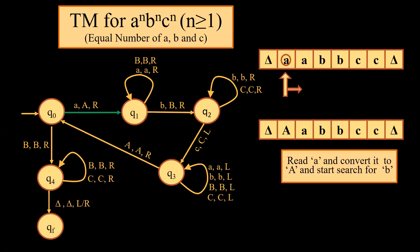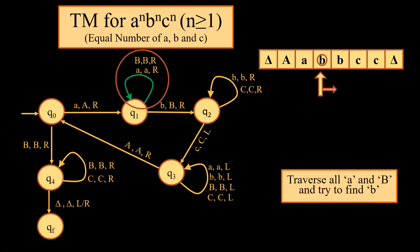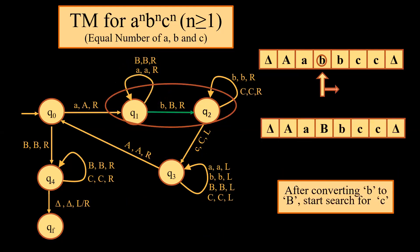Looking at this machine, from Q0 to Q1 we say: if we get small A, convert it into capital A. Next is a loop on Q1. When we are moving toward finding the first small B, we will come across small A in between, so we have a self-loop — A, A, R — we keep on moving towards the right. Once we are moving back, we will also encounter capital B intermediate between small A and small B, that is why we have kept capital B, capital B in the loop. After this, we move to small B, which is converted into capital B, and we move right to find small C.